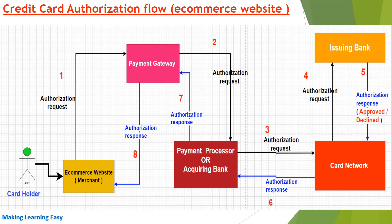For different cards you may have different payment processors — that depends on the merchant or business. In the payment processor box you'll also see the acquiring bank mentioned, because many acquiring banks have their own payment processor. If the merchant is using a bank with its own payment processor, you would write the acquiring bank; if the merchant uses a third-party payment processor, you mention the payment processor.